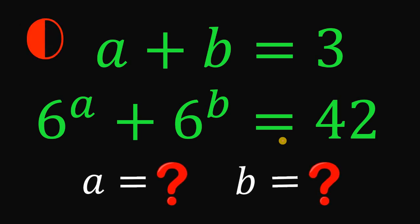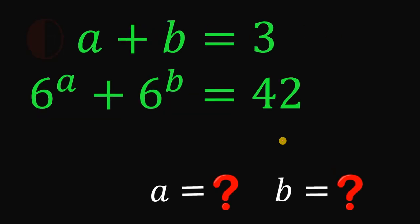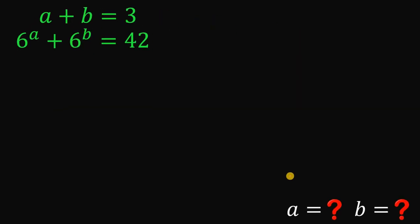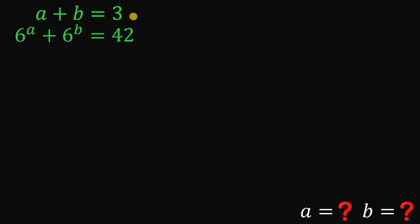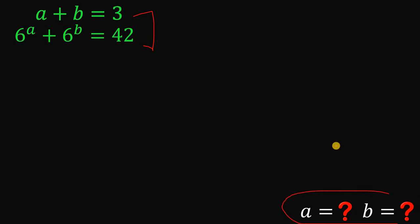And now let's answer this question together. So given these two equations — A plus B equals 3, and 6 raised to the power of A plus 6 raised to the power of B equals 42 — our goal is to solve for the values of A and B that satisfy this equation.